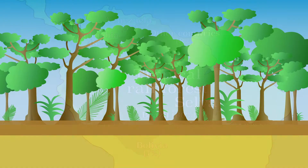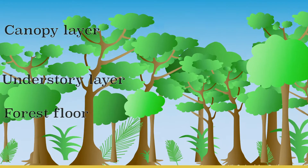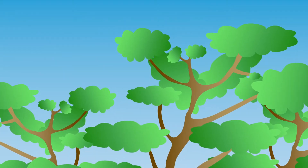Many different plants and animal species can live in the tropical rainforest because the rainforest has layers. Climate conditions are different at different heights, so it is a suitable place for many animals.